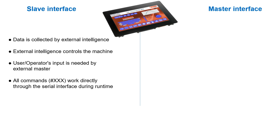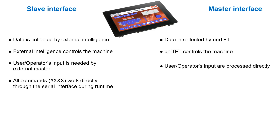The UniTFT's master interface is used if sensors are connected to collect data and to control the machine directly, without the need of an external intelligent master. In contrast, the UniTFT command table cannot be used directly through the interface — the commands need to be combined in macros. The macros can be called through touch button events or through UniTFT internal logic, for example if a sensor sends a certain value.